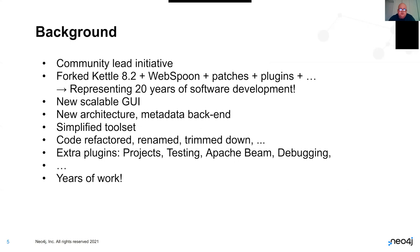This community started working on Hop a long time ago. In the end, we forked the old Kettle codebase from Pentaho, now owned by Hitachi. There were so many things we did to that codebase to make it more up to date. More and more changes kept coming, and at some point we said let's not have 20 years of software development go to waste - let's start from scratch. A lot of stuff from Kettle had to go away: the whole GUI, architecture, metadata backend - a lot of code was thrown out and rewritten. That took a couple of years. We simplified the toolset, refactored, renamed, trimmed down, and added more plugins as part of Apache Hop itself: project management, unit testing, Apache Beam, ease of debugging.